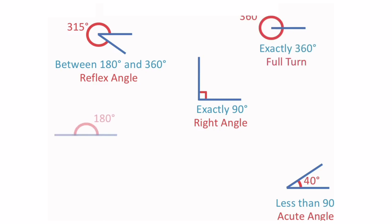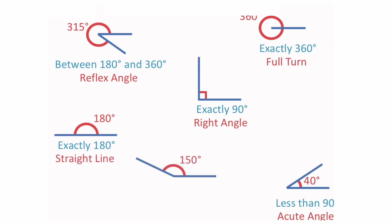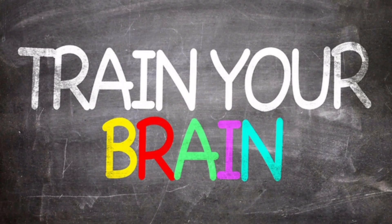This is a straight line, which is equal to 180 degrees. This angle is 150 degrees, so it is an obtuse angle, because it is in between 90 degrees and 180 degrees. Train your brain by answering these questions.